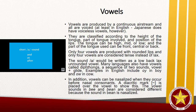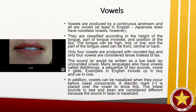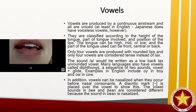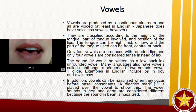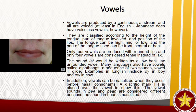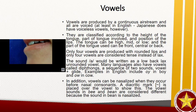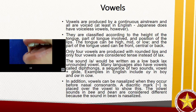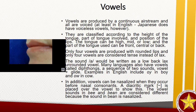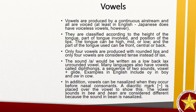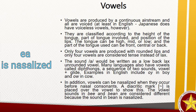Vowels are produced by a continuous airstream and all are voiced, at least in English — though Japanese does have voiceless vowels. They are classified according to the height of the tongue, the part of tongue involved, and the position of the lips. The tongue can be high, mid, or low, and the part of the tongue used can be front, central, or back. Only four vowels are produced with rounded lips, and only four are considered tense instead of lax. Many languages also have vowels called diphthongs — a sequence of two sounds, vowel plus glide. Examples in English include 'oi' in 'boy' and 'au' in 'cow.' Vowels can also be nasalized when they occur before nasal consonants, indicated by a diacritic mark placed over the vowel.